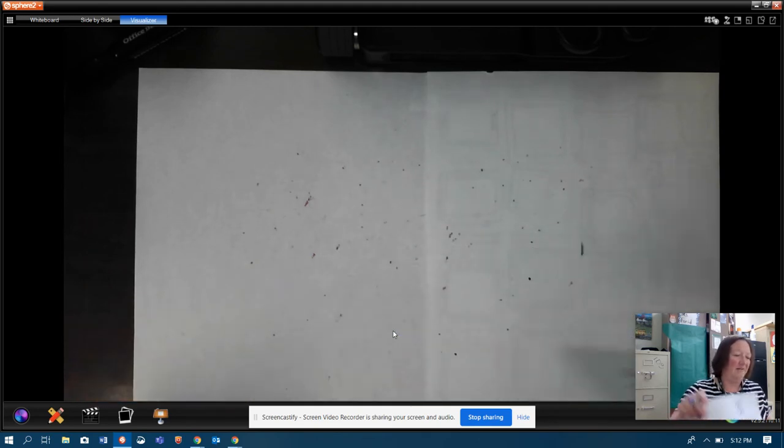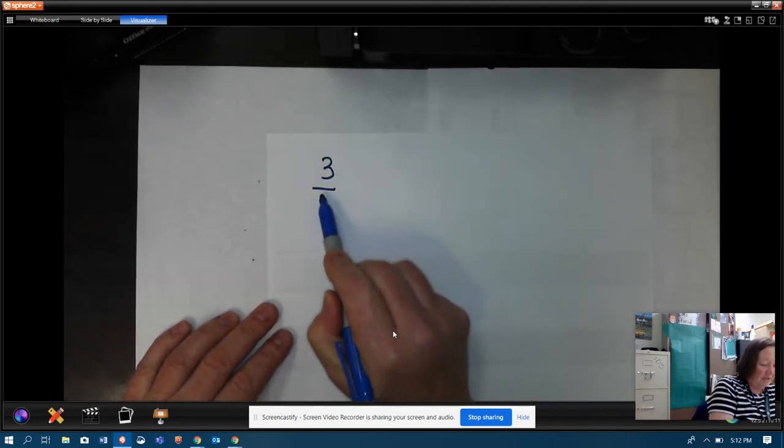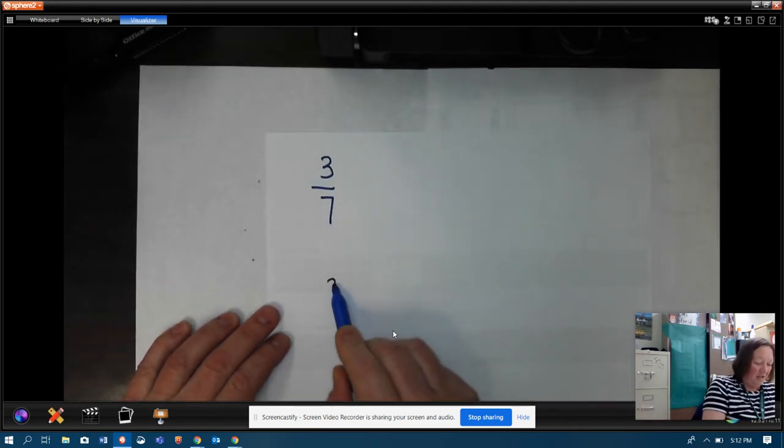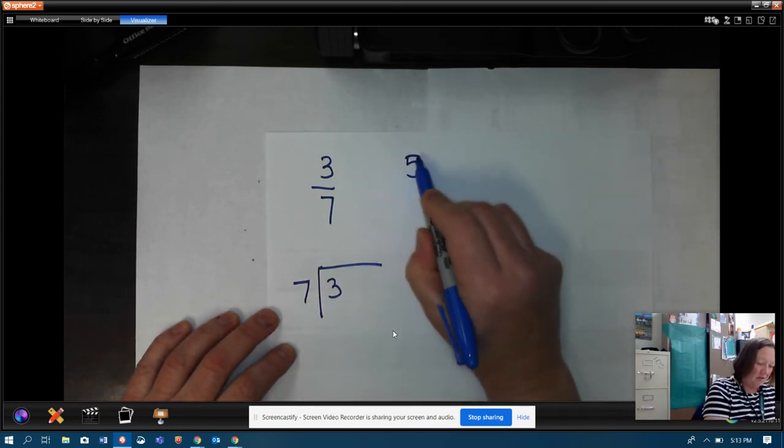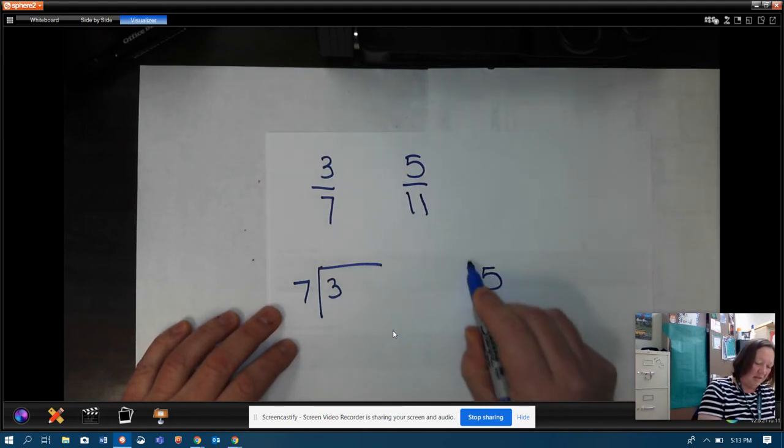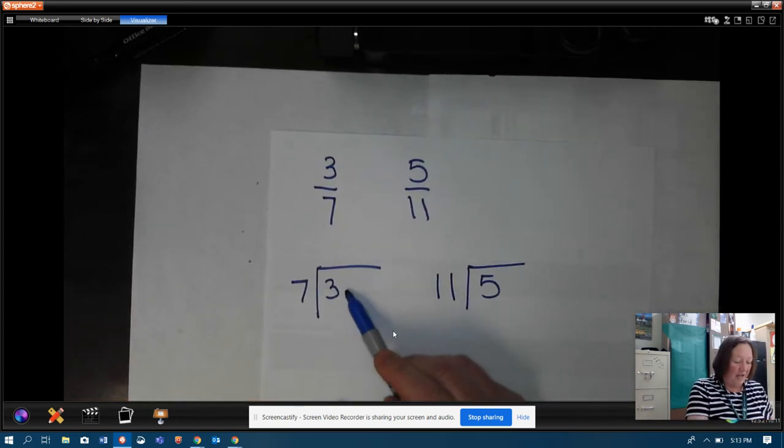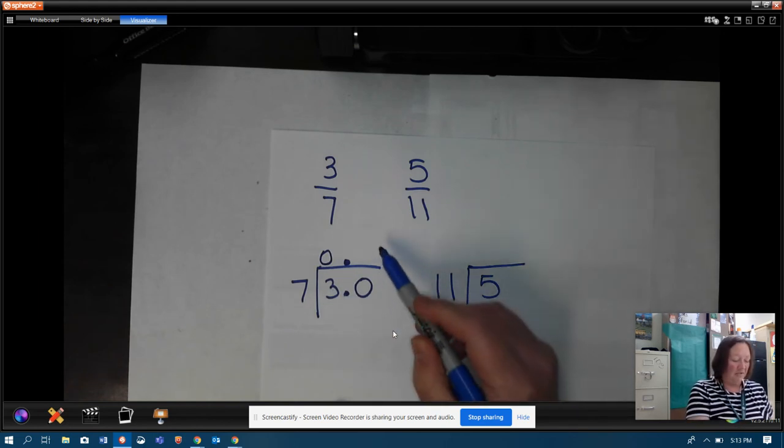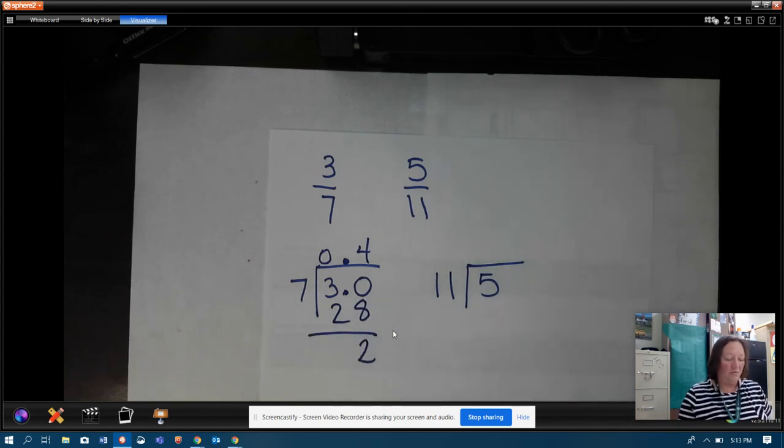All right, let's look at that three sevenths and five elevenths. Let me get a new sheet of paper. Three sevenths and five elevenths. If I have three sevenths, that's going to be three divided by seven. And five elevenths, that would be five divided by eleven. Now, seven doesn't go into three, but I'm going to put that decimal and a zero. I'm going to bring that decimal up. Seven doesn't go into three, but it goes into thirty. Well, I know seven times four is twenty-eight. And I have two left over.